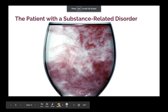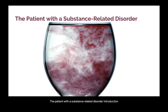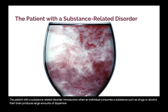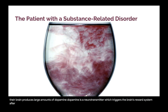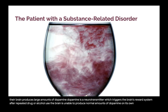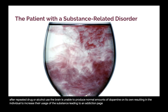The patient with a substance-related disorder: introduction. When an individual consumes a substance such as drugs or alcohol, their brain produces large amounts of dopamine. Dopamine is a neurotransmitter which triggers the brain's reward system. After repeated drug or alcohol use, the brain is unable to produce normal amounts of dopamine on its own, resulting in the individual increasing their usage of the substance, leading to addiction.